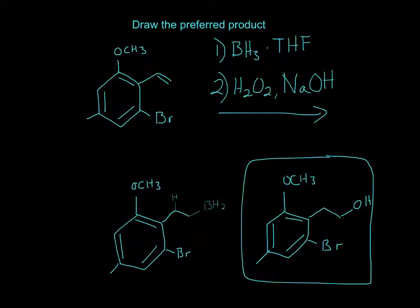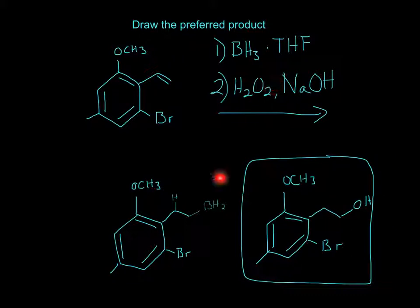To recap: BH2 adds to the less substituted spot, because this is a primary carbon and this is secondary, so BH2 adds right here. Then H2O2 gets rid of the BH2, OH adds to this spot, and you finally have a product with the OH on the less substituted spot.